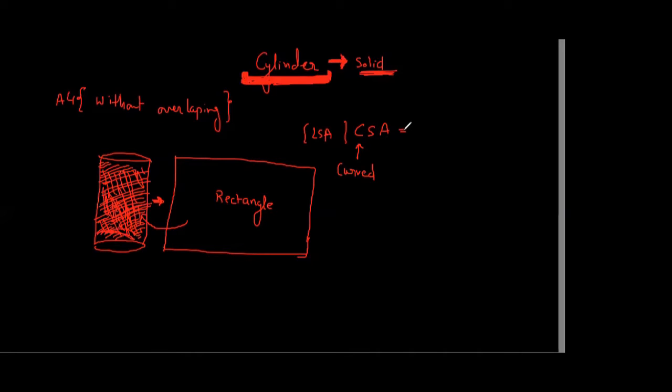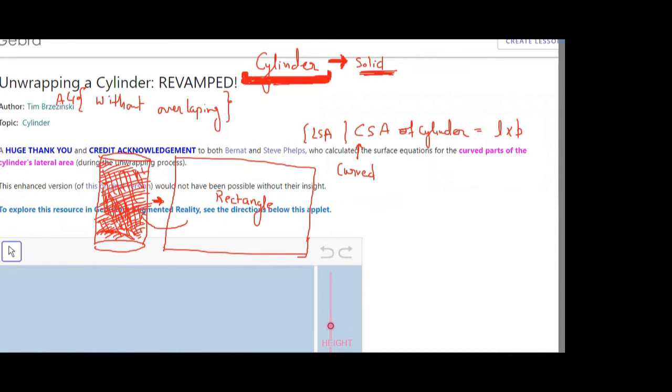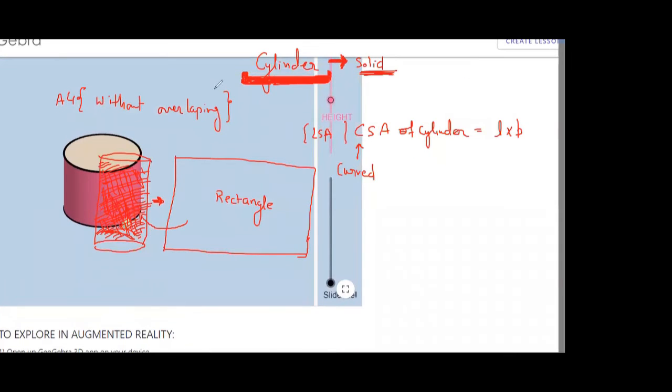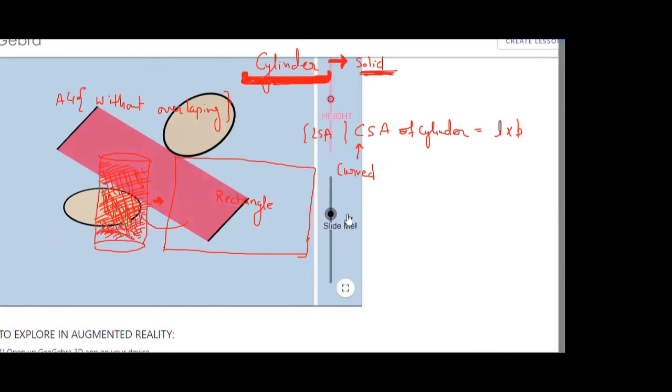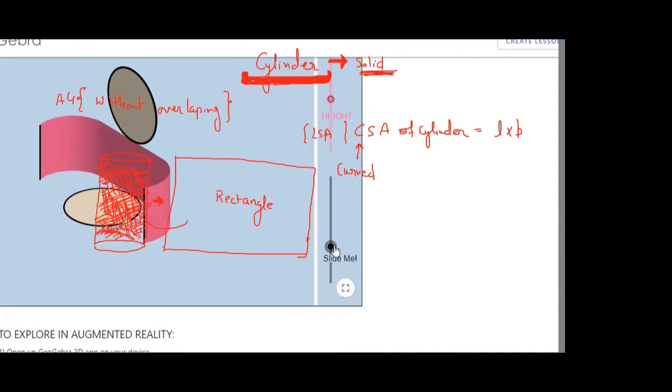So can I say curved surface area of cylinder is actually equals to L into B of this rectangle? Can I say that? Yes. Just see whether we have some net over here or not. So it is something like this. I'm talking about this pink sheet we had, yes or no?